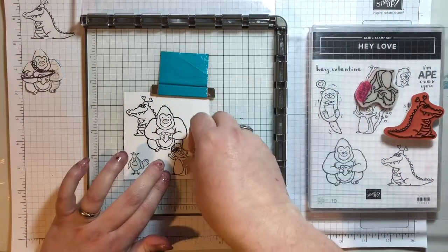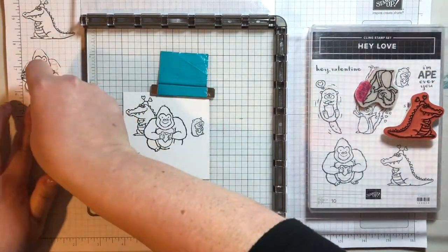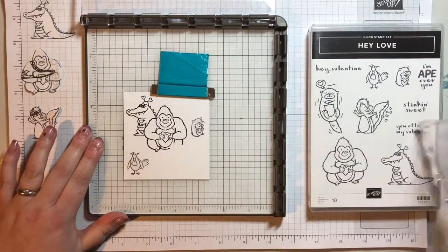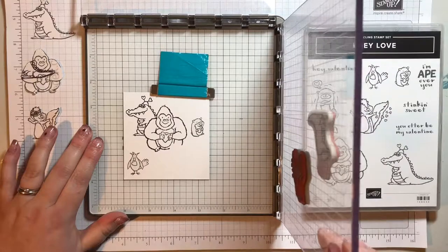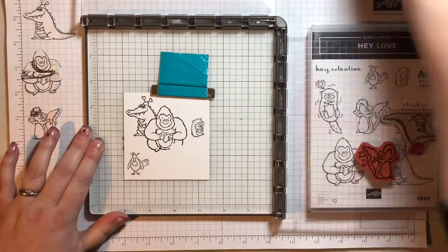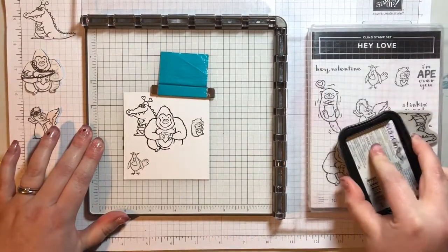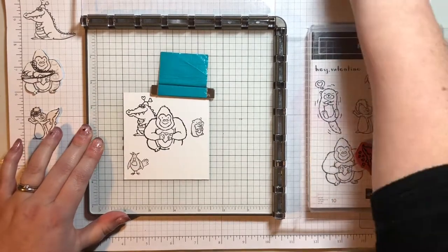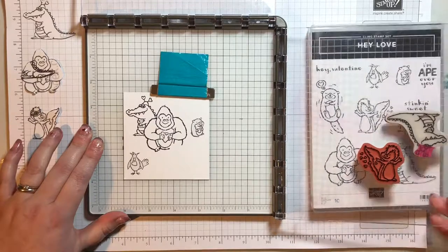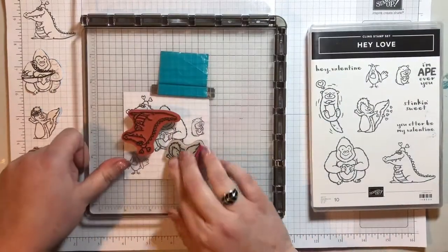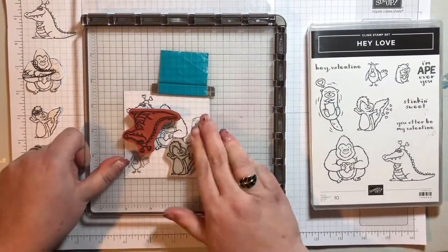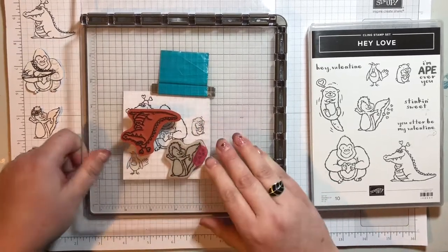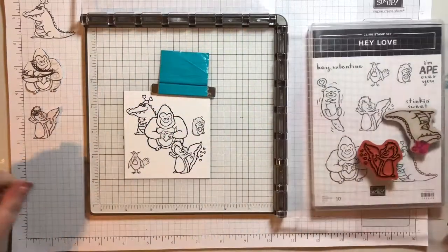And then we take the skunk masking off. Flip the plate. And ink and stamp the skunk.